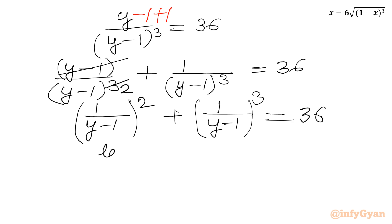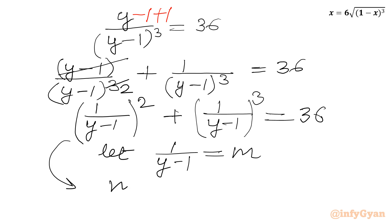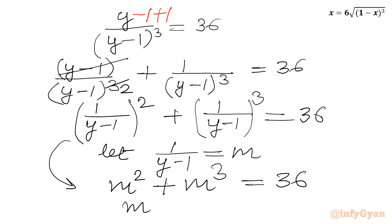Now our obvious substitution is M equals 1 over (y minus 1). Substituting, the equation becomes M² plus M³ equals 36, or M³ plus M² minus 36 equals 0.